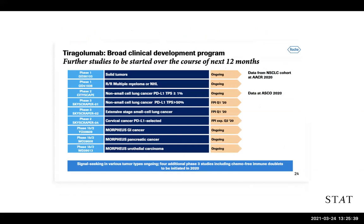Based on these data, Roche has a pretty extensive program with tiragolumab looking at a variety of different cancers. I would direct you to the Skyscraper-01 Phase 3 study in particular — a study in non-small cell lung cancer with high PD-L1 expression. Based on the Phase 2 data, Roche started this Phase 3 study to confirm the benefit they saw. It started enrolling patients last year. You can see that for a company like Roche, they're placing a pretty big bet on TIGIT, given the number of studies and types of cancers they're running.